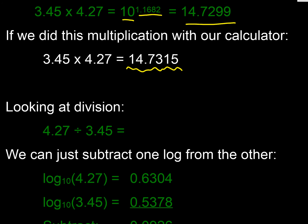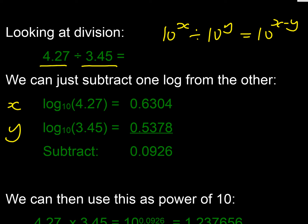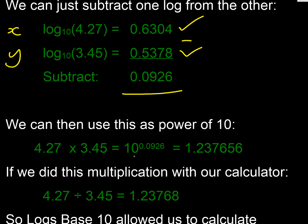We can do exactly the same thing for division. If we had 4.27 divided by 3.45, we know from power relationships that 10 to the power x divided by 10 to the power y is 10 to the x minus y. So we subtract the logs: 0.6304 minus 0.5378 equals 0.0926. Then 10 to the power 0.0926 gives 1.2373, which matches what we'd get on the calculator. So we can use logs to do multiplication and division.